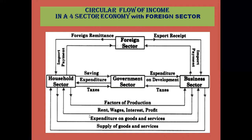Households and firms: households supply factors of production to the firms - that is land, labor, capital, and organization. Factors of production flow from households to firms because firms employ them to undertake the production process. In return, the firms or business sector pay rent, wages, interest, and profit back to the households.